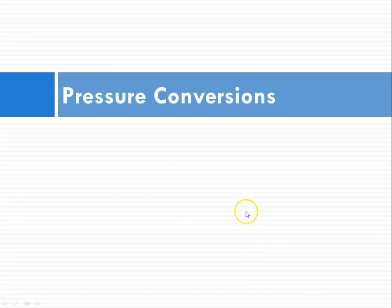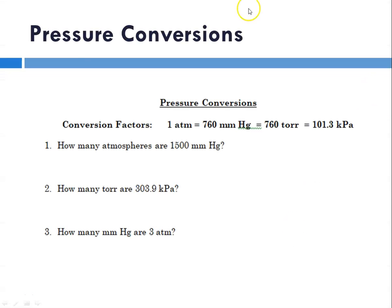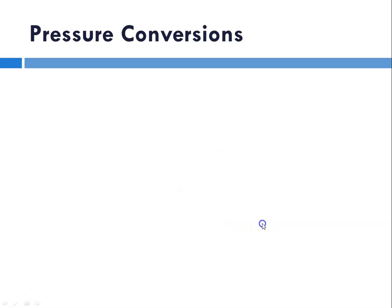I thought we would do one quick pressure conversion. If we were looking at a pressure conversion sheet that would look like this, you're asked, for instance, how many atmospheres is the same as 1,500 millimeters, or how many torr are in 303.9 kilopascals. I'm going to do one of these.